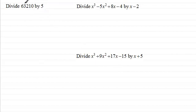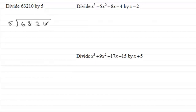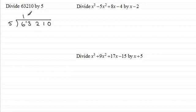So I've got this one here: divide 63,210 by 5. Now one way of doing this would just be to do fives into 63,210. If we're doing it by short division, we'll say 5 into 6 goes once, because 1 × 5 is 5, and that leaves us with 1 left over. We put that against the 3 to make 13. What do we multiply 5 by to get as close as we can to 13? It's going to be 2.